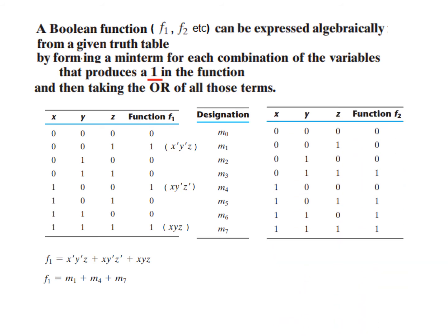Now let's see function F2. This function is defined to be 1 at several rows. In this case, instead of writing out full expressions, we can directly write the symbolic values. The rows with value 1 have decimal values 3, 5, 6, and 7, so the symbols are m3, m5, m6, m7. We can directly write that F2 is the summation of m(3,5,6,7). Any Boolean function can be expressed as a sum or ORing of the min terms.